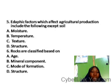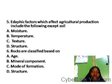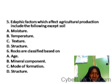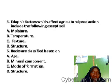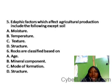Question five: edaphic factors which affect agricultural production include the following except. Factors affecting agricultural production fall into three categories: biotic, climatic, and edaphic. Edaphic factors are soil factors. All options listed are edaphic factors except temperature, which is a climatic factor. Temperature is therefore the correct answer — the exception.